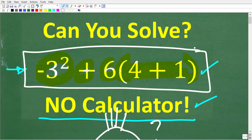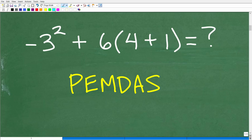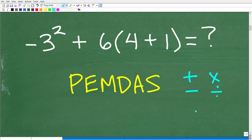Let's see exactly how to solve this problem without a calculator. The first thing we need to think about is the order of operations. In mathematics, things like addition, subtraction, multiplication, division, and powers are mathematical operators. We need to know the correct order to perform them, because depending on the order you take, you'll generate different values.